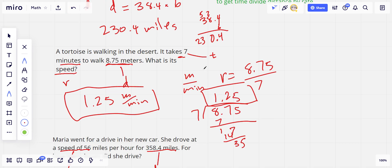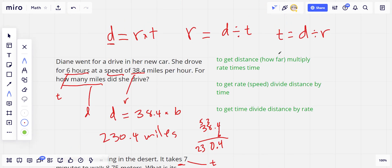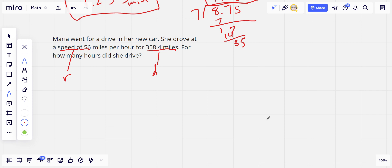So you may want to jot these down in your notes, but that formula for time is distance divided by rate. So let's do that. Our time equals 358.4 divided by 56. And you could do that on a calculator. I don't have one handy right now, so I'm just going to crunch this out the old-fashioned way.